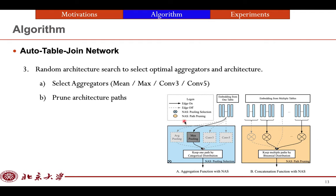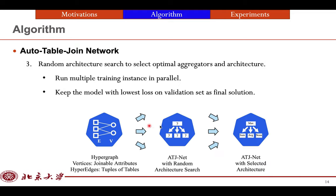So we use random architecture search to prune redundant paths and select optimal aggregators in ATJNet. Here on the left side, we choose one aggregator from min, max, count of 3, count of 5 for aggregating multiple embeddings from one table. On the right side, we prune some architecture paths randomly by removing some paths from one table to another. Finally, multiple instances of ATJNet with random neural architecture search are launched. And we keep architecture with the lowest loss on validation set as the final solution.